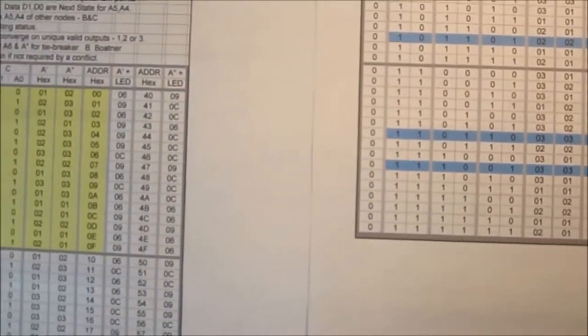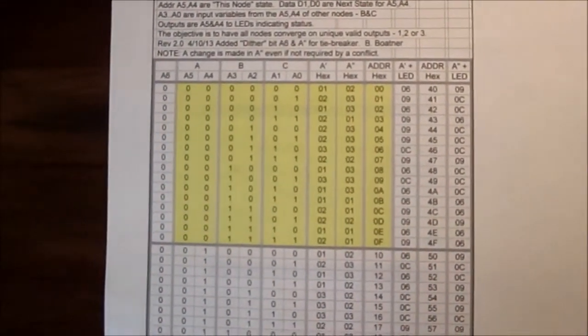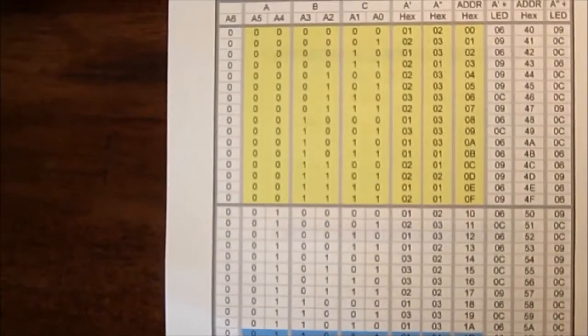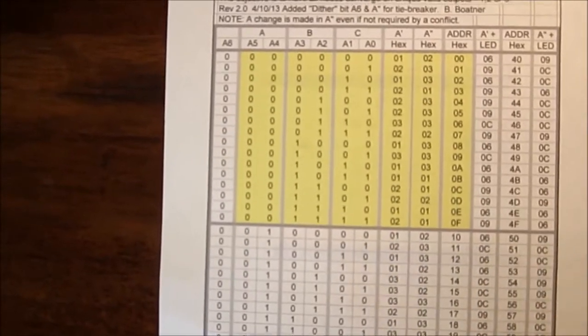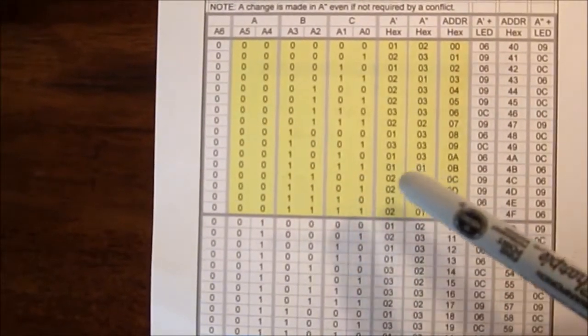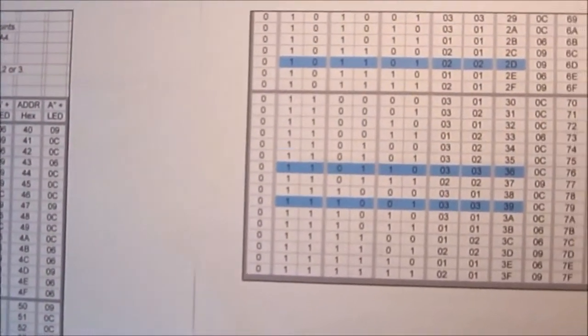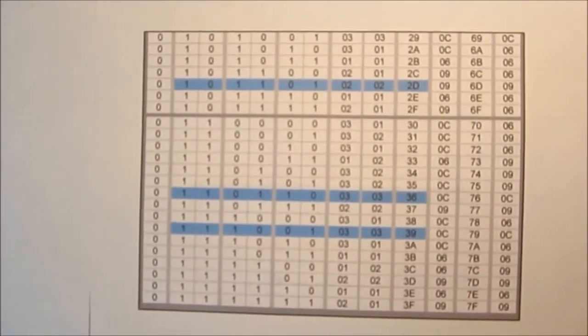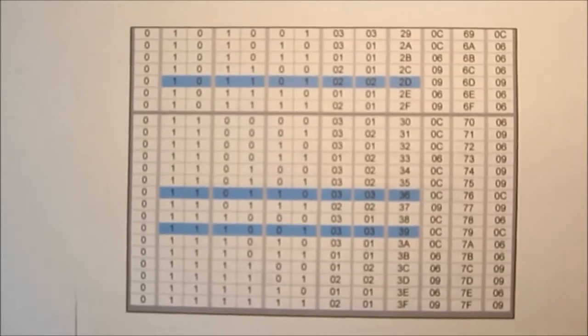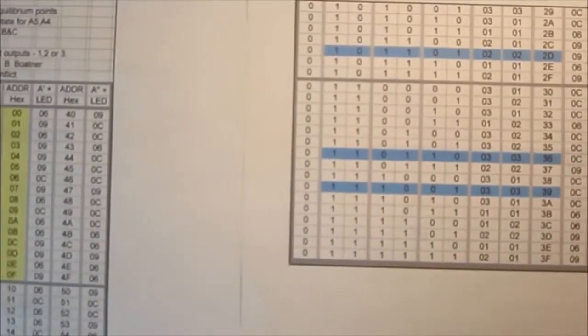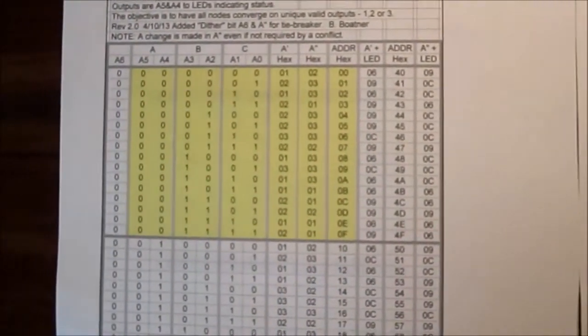So what I've done here is I've introduced a dithering condition where for every condition that one of these state machines finds itself in, depending on the dithering bit being a one or a zero, it might make a different decision.